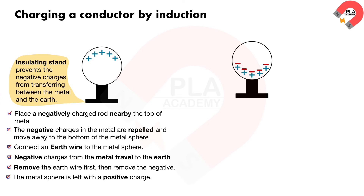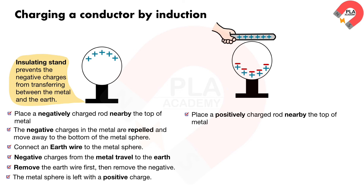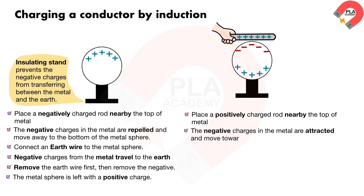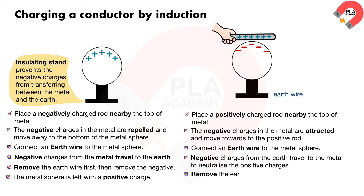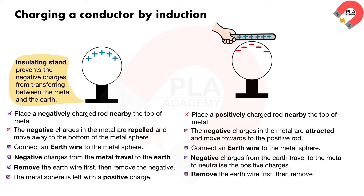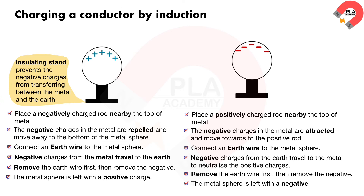If we change the negative rod to a positive rod: a positively charged rod is placed nearby the top of the metal. The negative charges in the metal are attracted and move towards the positive rod. An earth wire is connected to the metal sphere, and negative charges from the earth travel to the metal to neutralize the positive charges. The earth wire is removed first, then the positive rod. The metal sphere is left with a negative charge.